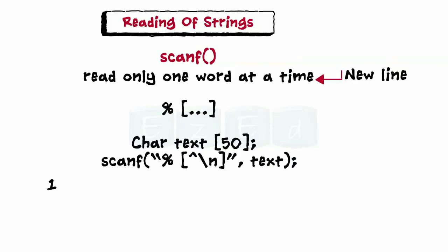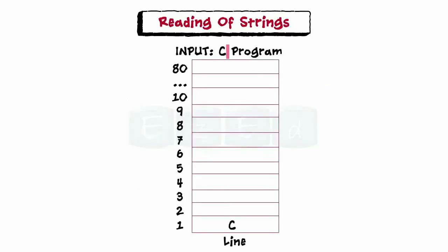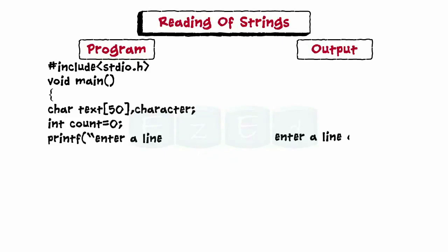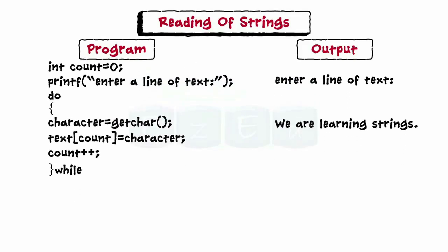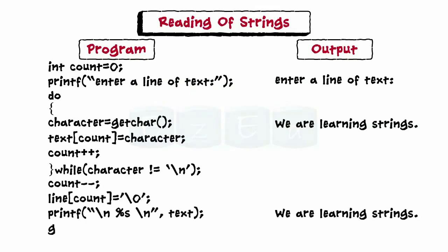We know that we can read a single character as input using the getchar function. Similarly, we can use the getchar function to read an entire line of text having more than one word, by repeatedly reading each character and storing it in the character array. In the program, a do-while loop is used to scan in the string, reading each character using getchar, placing it in the array, and incrementing the counter. This loop continues until the entered character is a new line character. The last character of the array is then set to the null character.